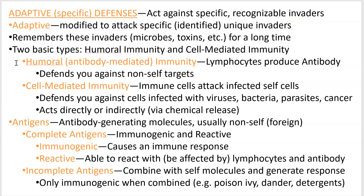Humoral immunity is the one that uses antibodies — molecules that are built to suit particular attackers. Your B cells, which are lymphocytes, make antibodies. This branch of immunity mostly handles things like bacteria, fungi, snake venom, and internal parasites.